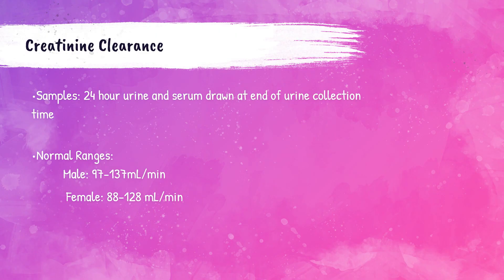For creatinine clearance, the patient is given a 24-hour urine specimen jug to collect all of their urine over a 24-hour period. When they submit their urine sample to the laboratory, blood is also drawn to perform the serum creatinine level, which is then entered into the equation to produce the creatinine clearance result for that patient.